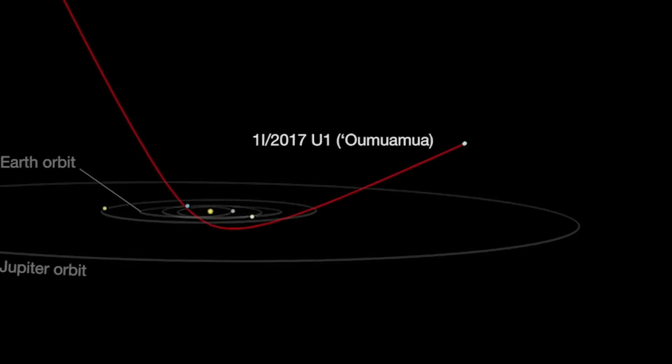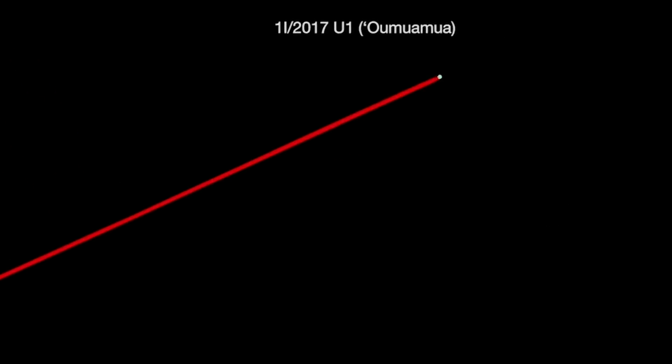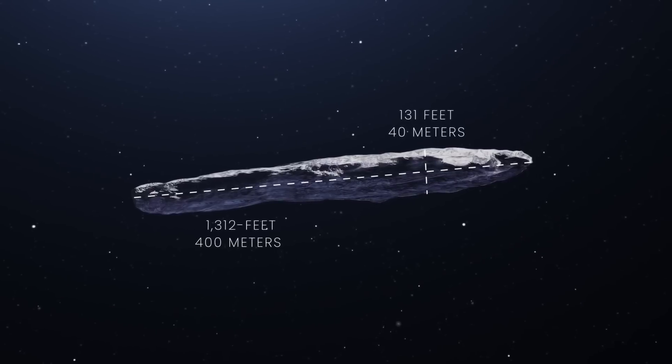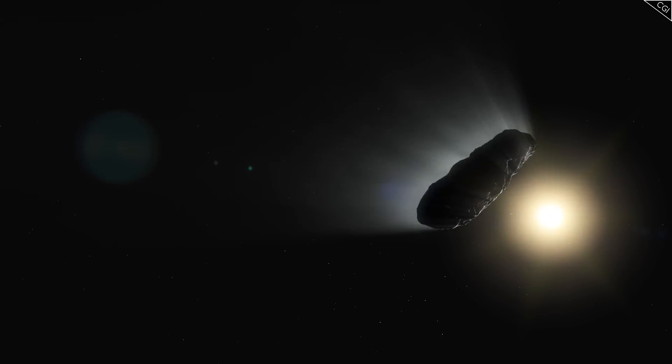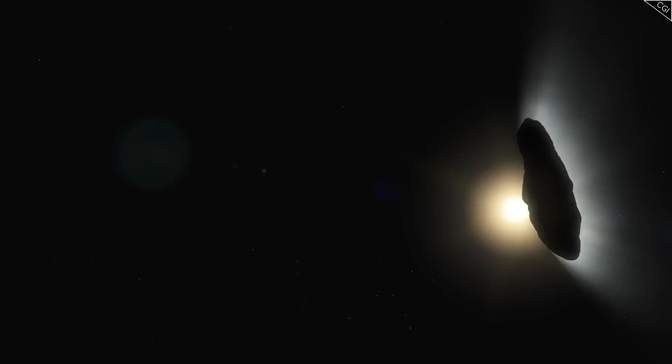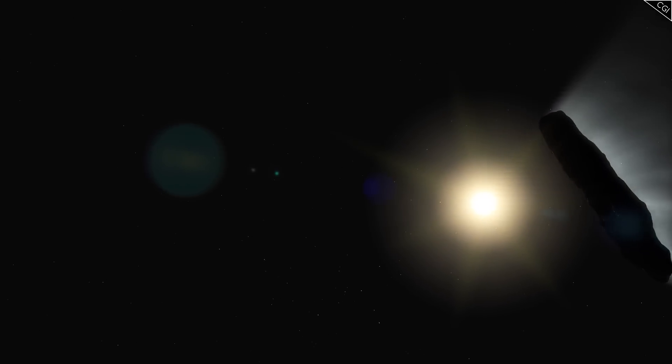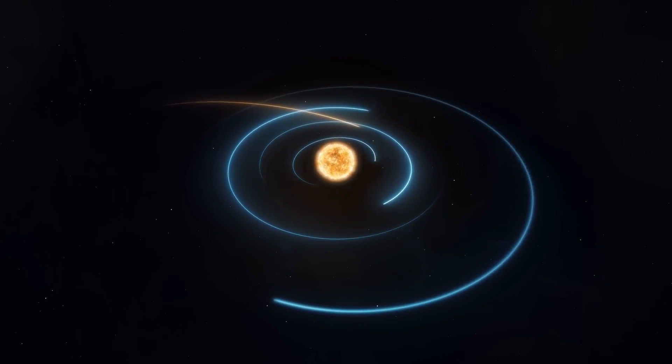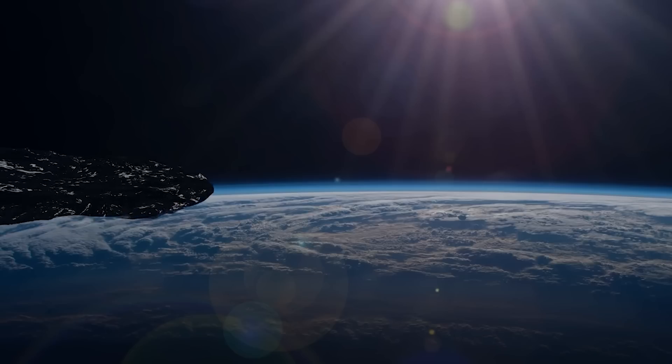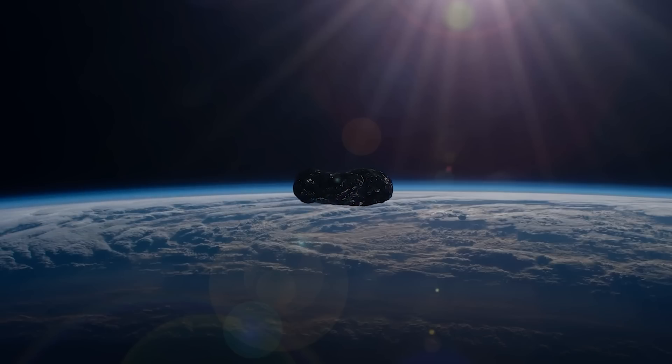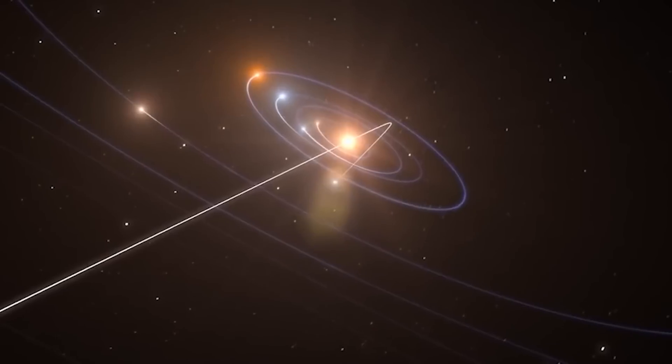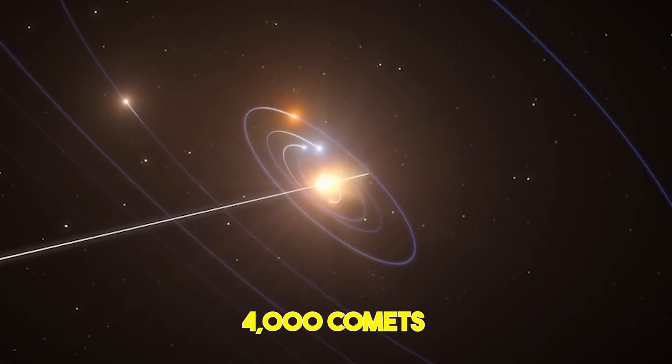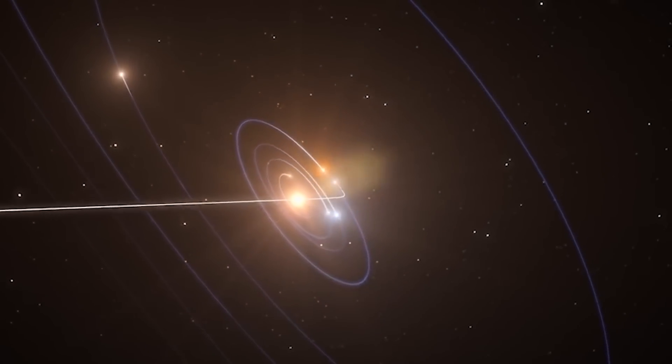Oumuamua was initially classified as a comet, but was eventually found not to be. All comets have an envelope of gas and dust surrounding their core, referred to as a coma, and when acted on by the Sun's radiation pressure and blown by the solar winds, the result is the formation of a long tail that points away from the Sun. So when scientists couldn't find a coma around Oumuamua, it was easy to tell this wasn't one of the over 4,000 comets in our solar system.